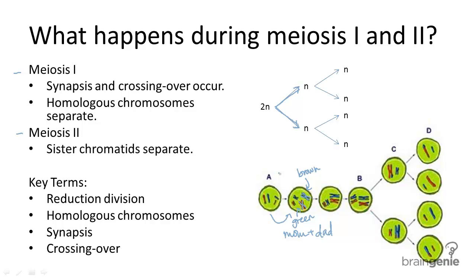In meiosis II, cells divide a second time to separate the sister chromatids in each chromosome. It's very similar to mitosis in that chromosomes line up and are separated along their centromeres, and this division maintains the haploid count in cells.